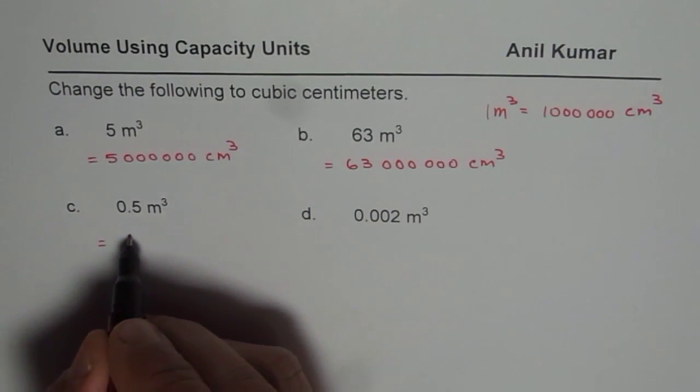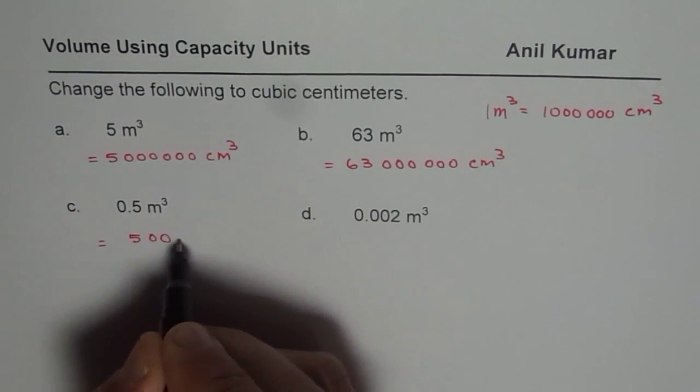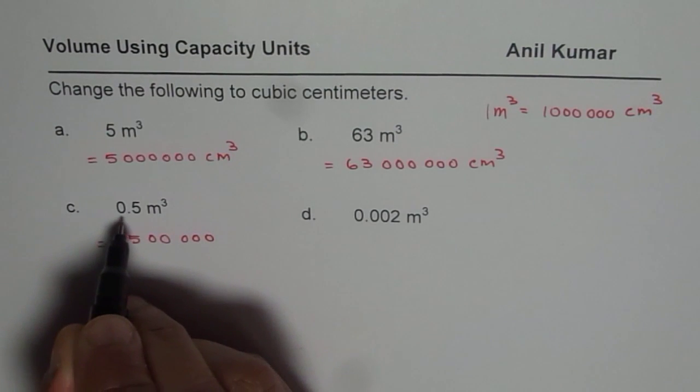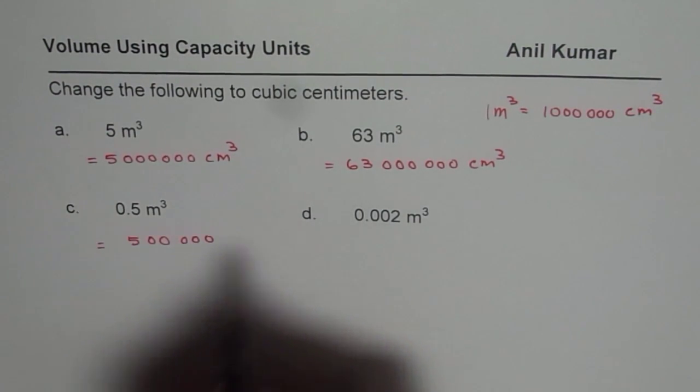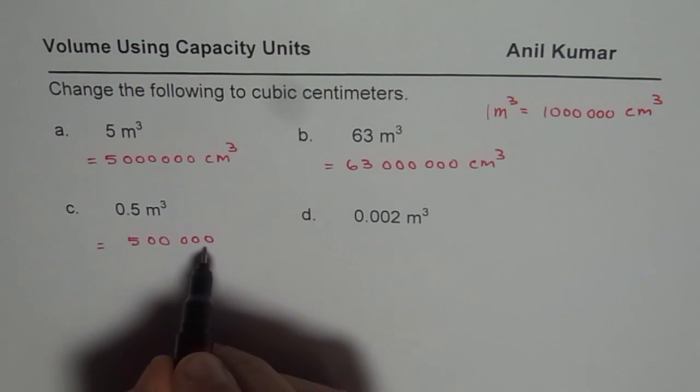We have 500,000, I should say. 500,000 is 0.5 million. That is how we can get this answer.